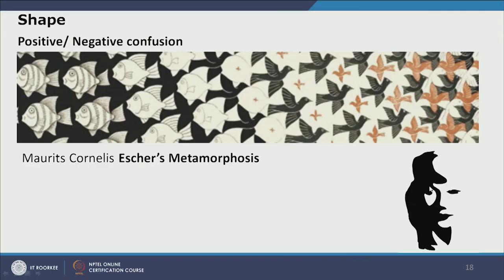In the right-hand corner we can see either a female face or a person playing a saxophone — sometimes we perceive the white shape as the figure, sometimes the black shape as the figure.